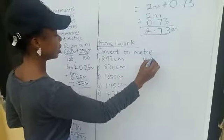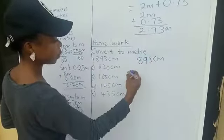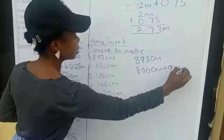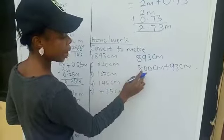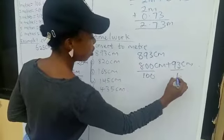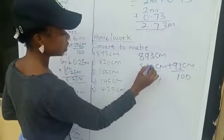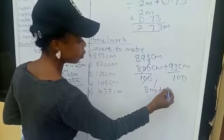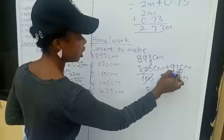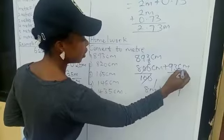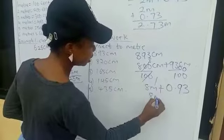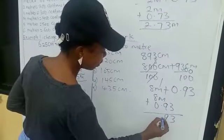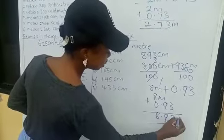So that's 893 centimeters to meters. Let's split it: 800 centimeters plus 93 centimeters. Now we are going to divide by 100. 100 in 100 is 1; 100 in 800 is 8. That's 8 meters. How many hundreds in 93? Impossible. Put the decimal point, add 0 to make 930. 100 in 930 is 9, remainder 30. Add 0 again. 100 in 300 is 3. That gives 8 meters plus 0.93. Our final answer is 8.93 meters.